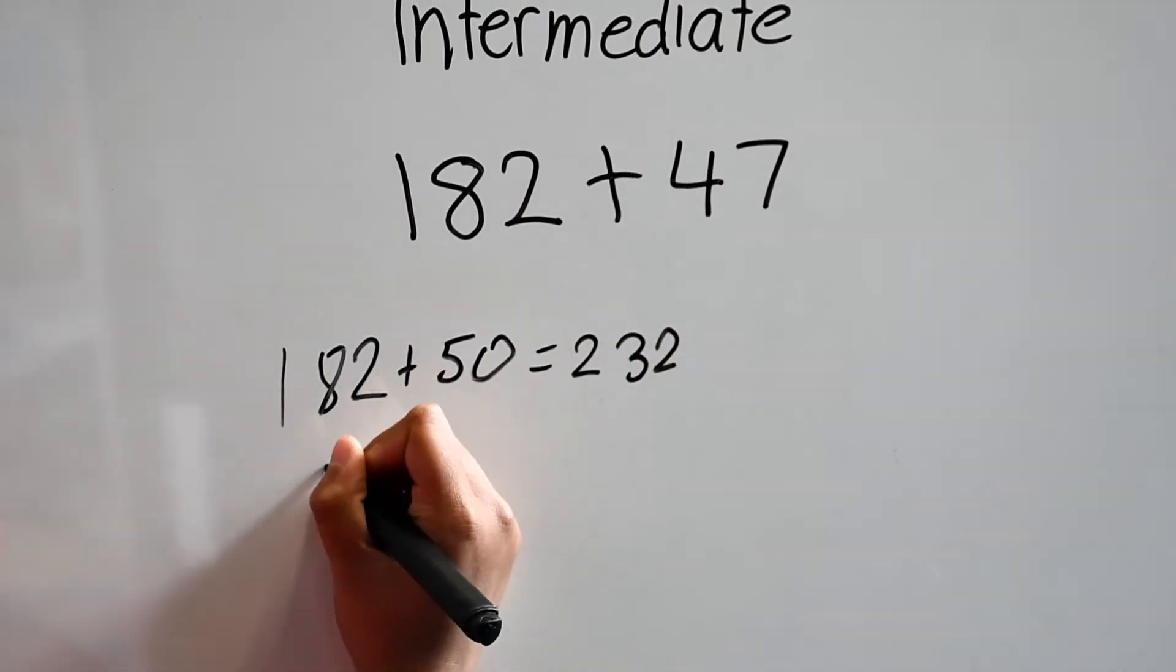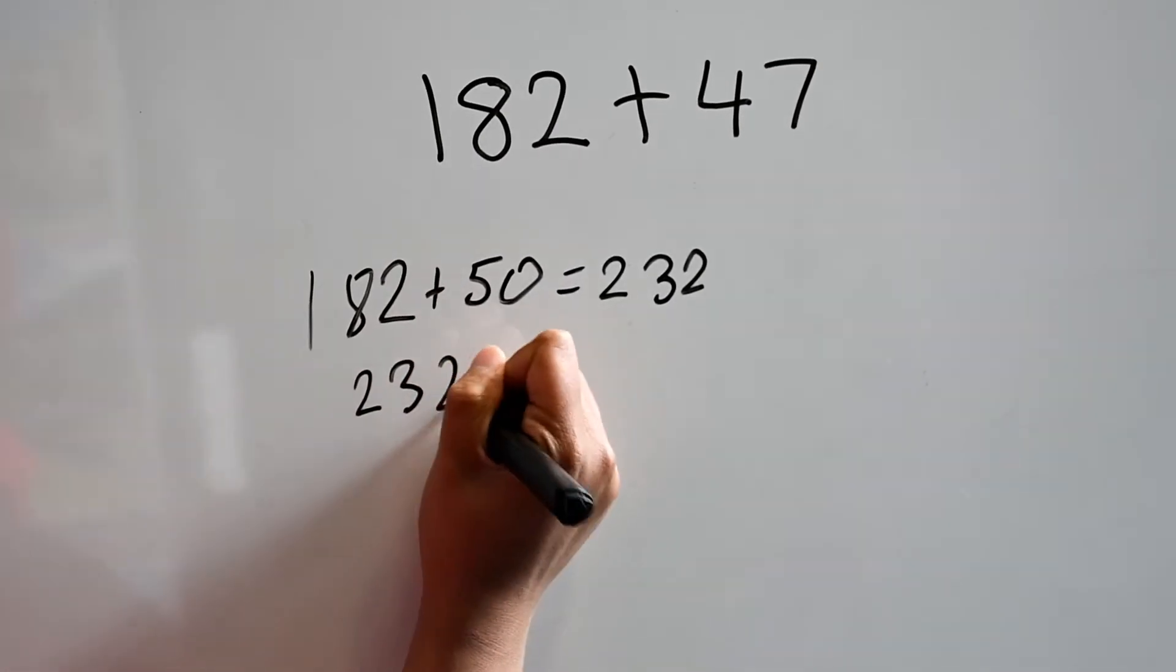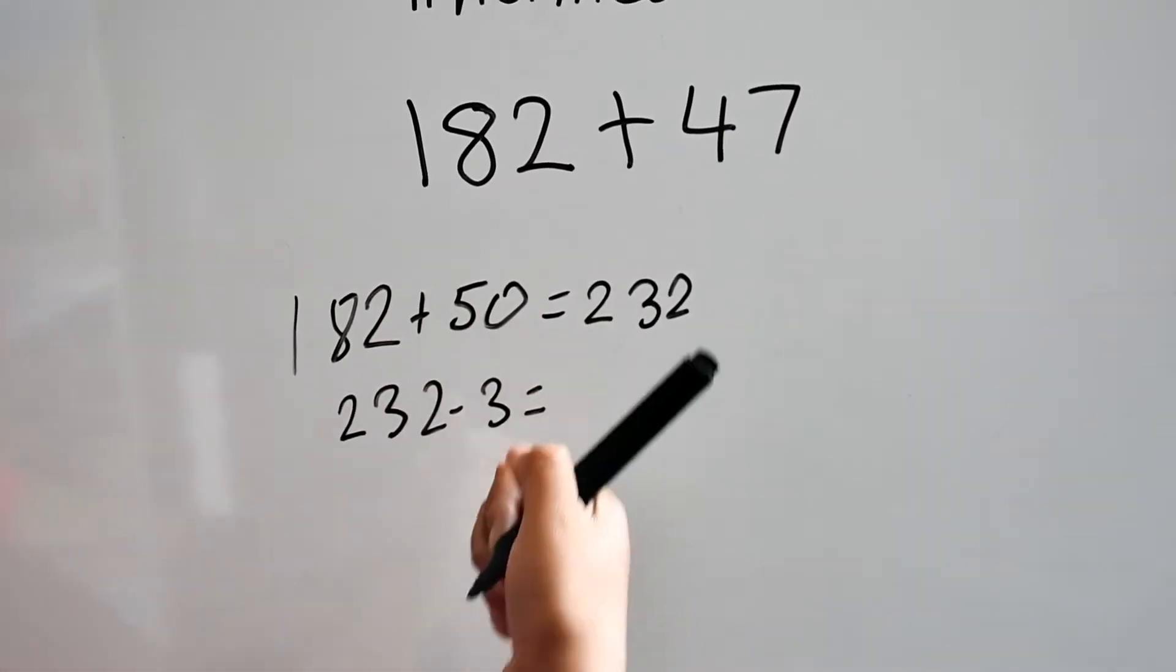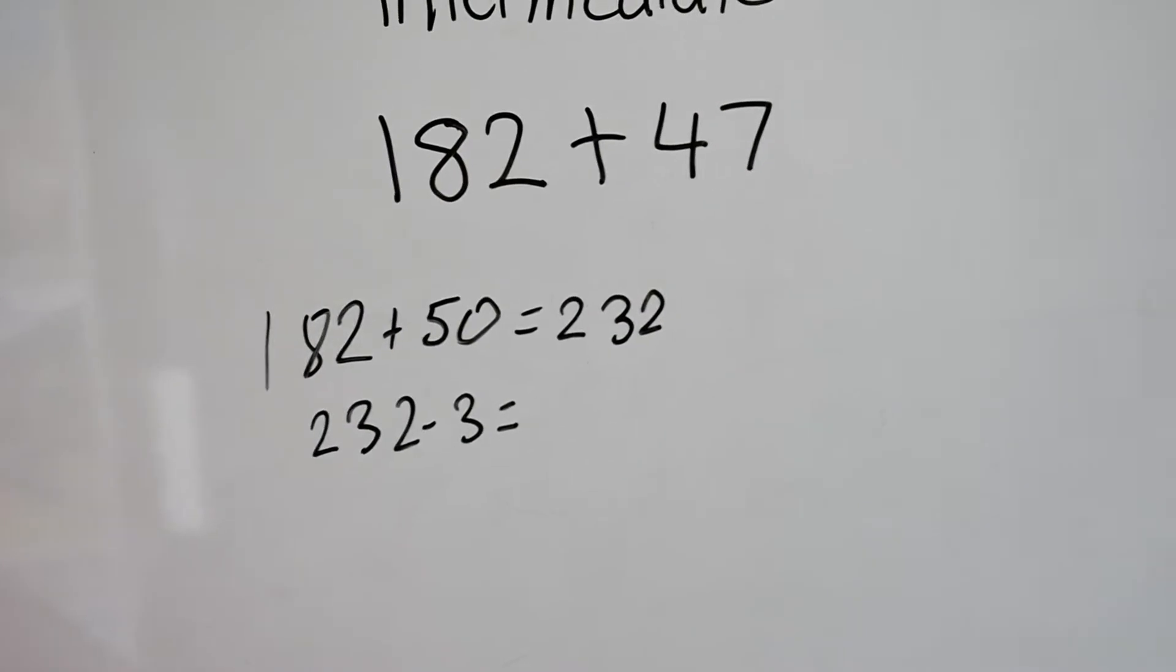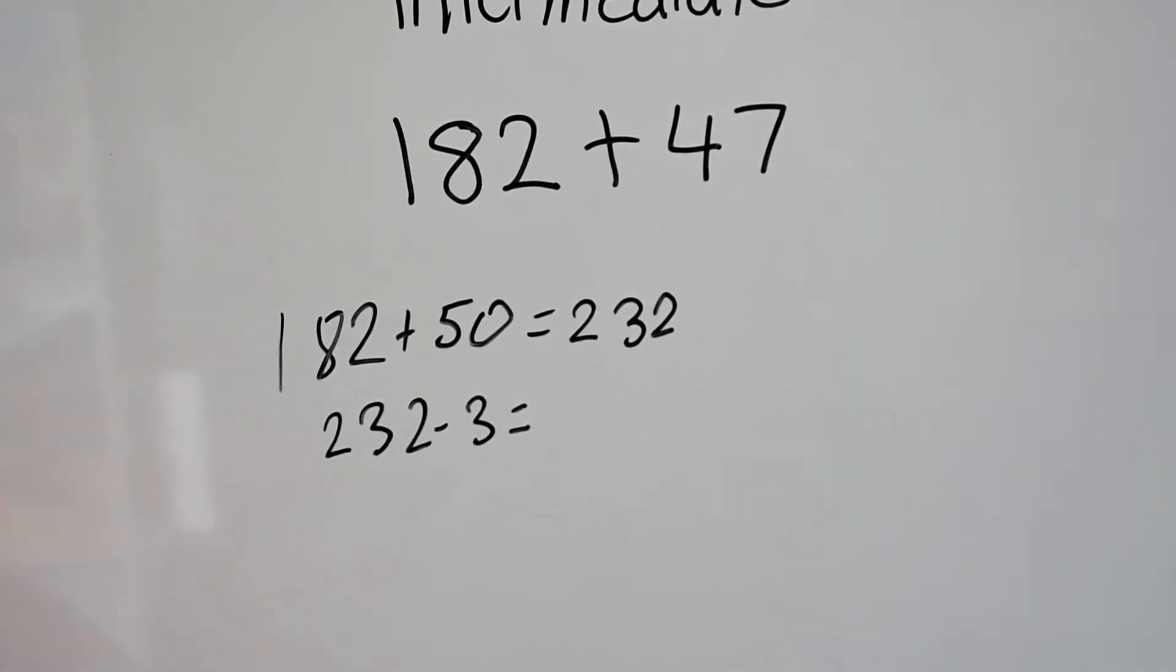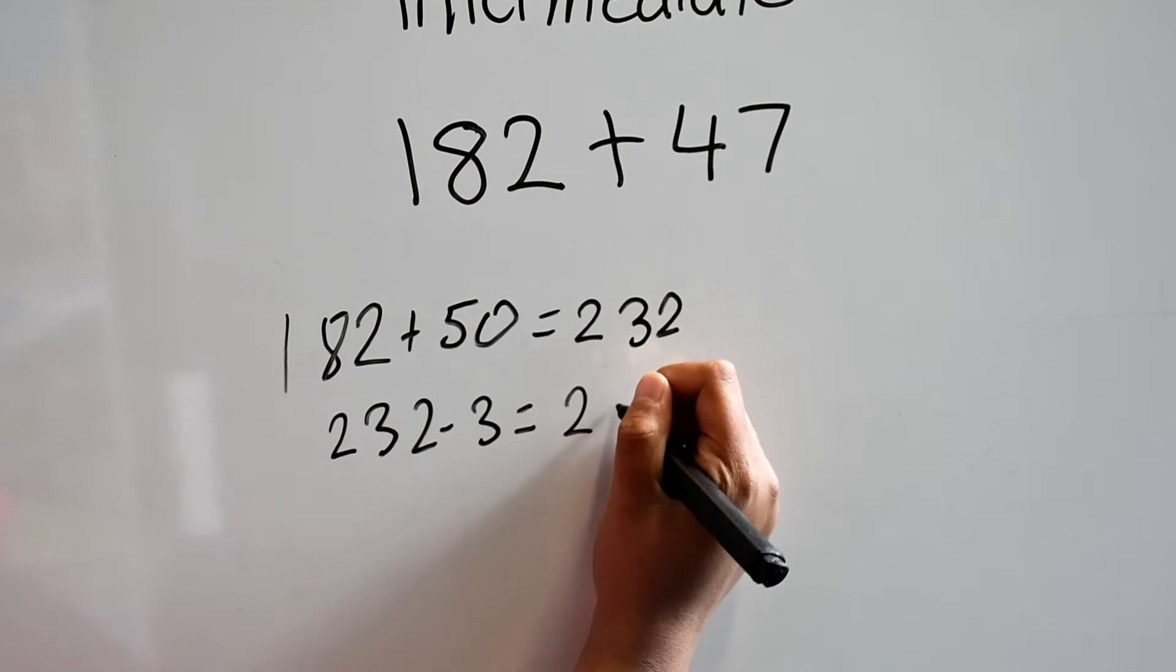Then we subtract 3 from 232 because we added 3 before. Thus the answer is 229.